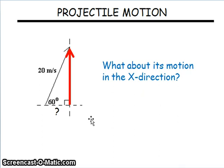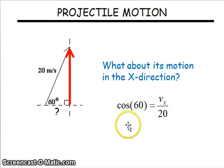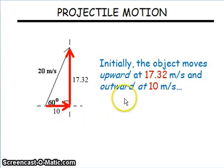What about the x motion? What trig function? That's going to be the cosine - the adjacent side. The cosine is the adjacent over the hypotenuse. If you do that calculation, you'll get 10 meters per second. So there's the breakdown: it's moving forward at 10 meters per second and upward at 17.32.